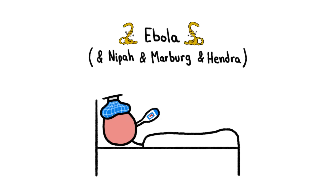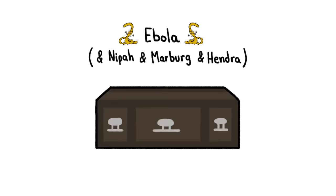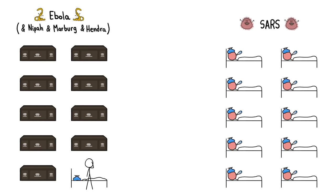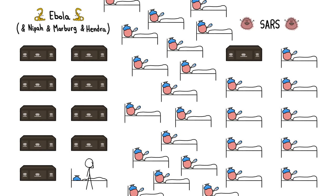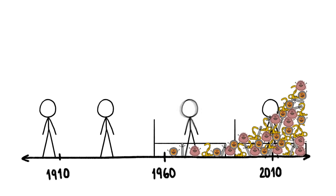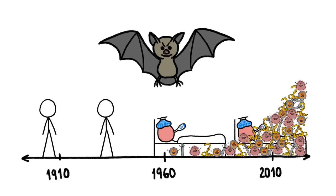Hemorrhagic fevers like Ebola are extremely fatal. They kill up to 90% of people infected, while SARS, a coronavirus, has a lower mortality rate but spreads incredibly rapidly. All of these nasty pathogens have surfaced in humans in just the last 50 years, and they are all carried by bats.